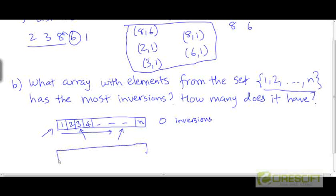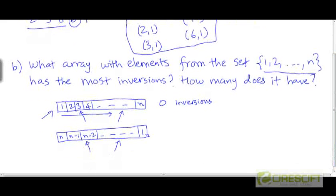If you reverse-sort the array so the elements are {n, n-1, n-2, …, 1}, then no matter which two elements you pick, the element on the left is going to be more than the element on the right. So every single pair of elements from this reverse-sorted array forms an inversion. This means the reverse-sorted array has the maximum possible number of inversions.